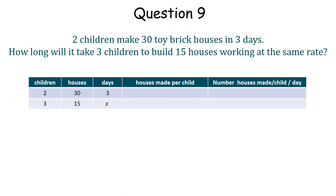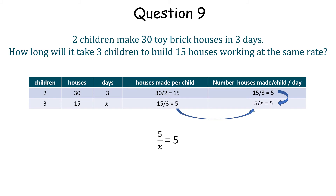If 2 children make 30 houses, then 1 child makes 15 houses. The children work for 3 days, so that's 5 houses per child per day. Now we have 15 houses built by 3 children, so that's 5 houses each child. Therefore, making and solving a similar equation, it takes 1 day to build 15 houses.